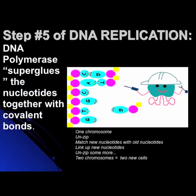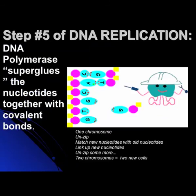DNA polymerase superglues the nucleotides together with covalent bonds between the phosphate sugars. The bonds between the bases are hydrogen bonds — double hydrogen bonds between A and T, and triple between C and G. Along the sides of the ladder, those are covalent bonds, much stronger than the hydrogen bonds.